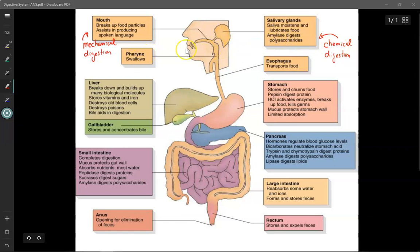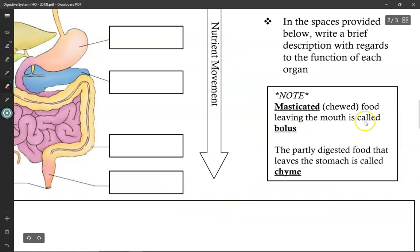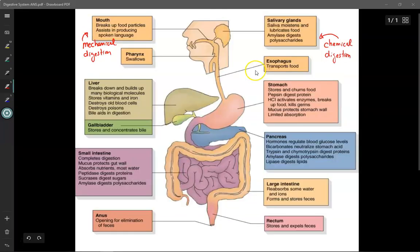The pharynx is responsible for swallowing the food, which at this point has been chewed up and is starting chemical digestion, so we call it bolus. And the esophagus pushes the bolus down using muscular contractions called peristalsis, until the bolus enters the stomach. Now the stomach stores the food and churns it around, which means the food, the bolus, is being mechanically broken up again as the stomach squeezes it back and forth to physically break it up even further.